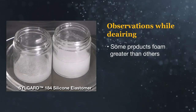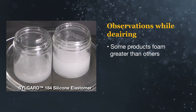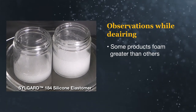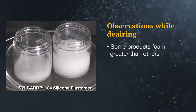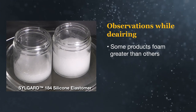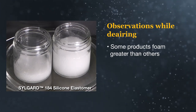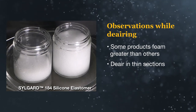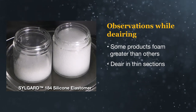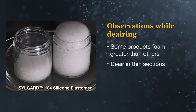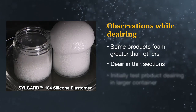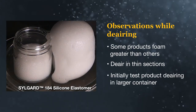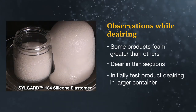For some products, foaming up can occur at a much greater degree than others. Dowsil Sylgard 184, for example, will increase in volume by a factor of 8 to 10 during de-airing. Due to this, 184 can only be de-aired in thin sections or in containers with a large headspace. In practice, be sure to initially de-air your product in a container with extra headspace.